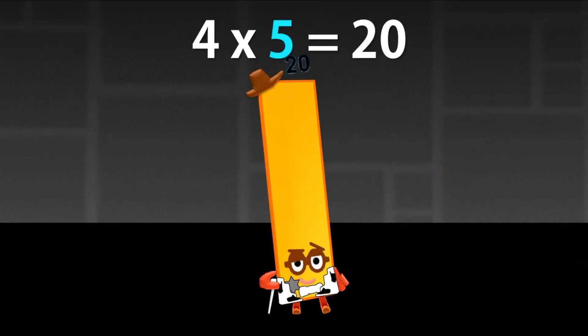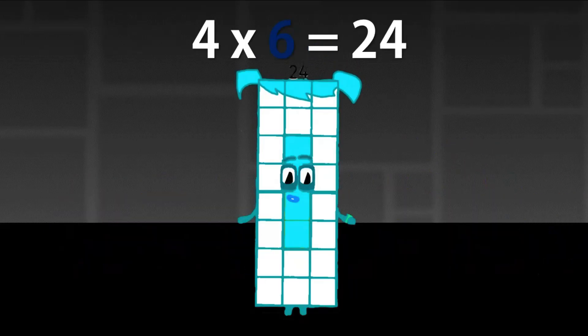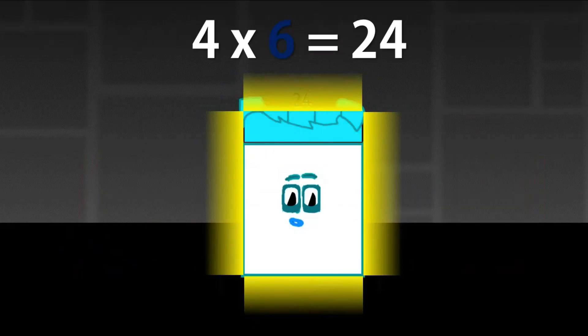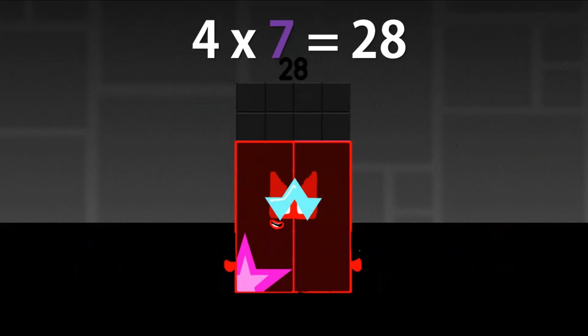Big dance number. Tap, tap, tap, tap, tap. 6 4s, a 24. Super duper ride those rays. Switch, turn, switch, switch, turn. 7 4s, a 28. Pick a pattern party people. Yeah!